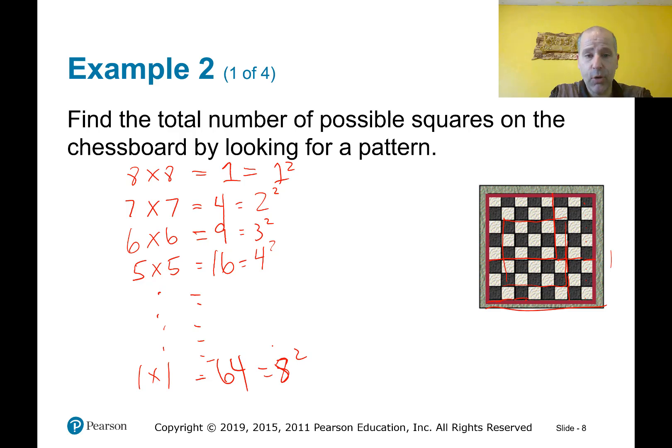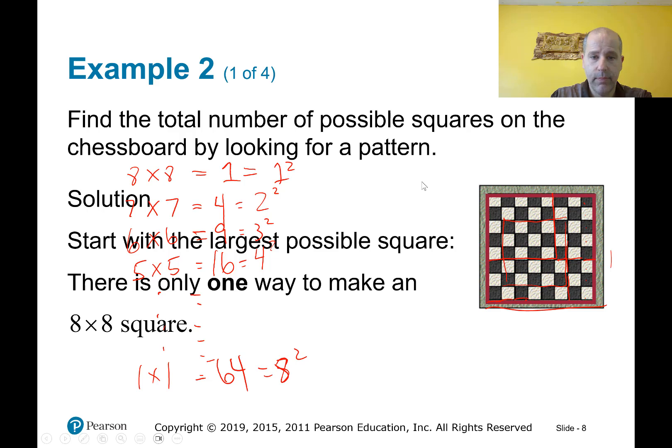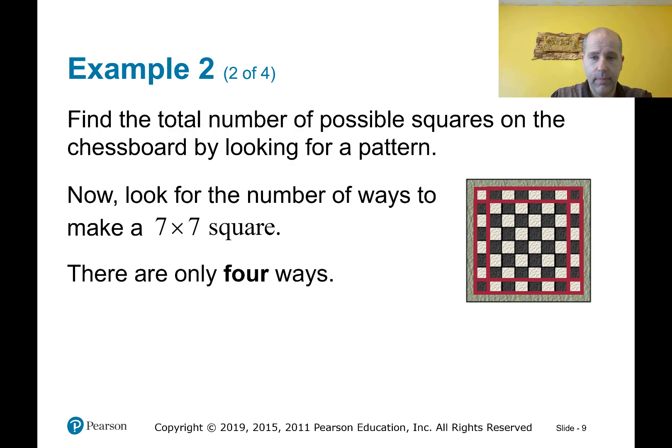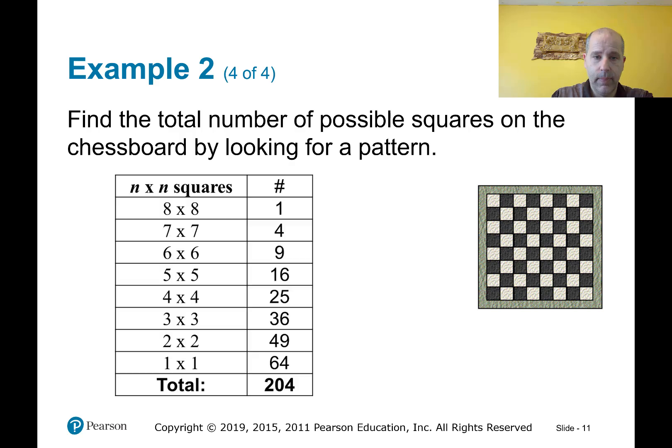And so now we know the pattern. So if we wanted to find all possible squares, we would just add up all of these squared values. And we can do that easily on a calculator. So let's go through this. And there we go. And so there are 204 possible squares in this checkerboard, eight by eight checkerboard.